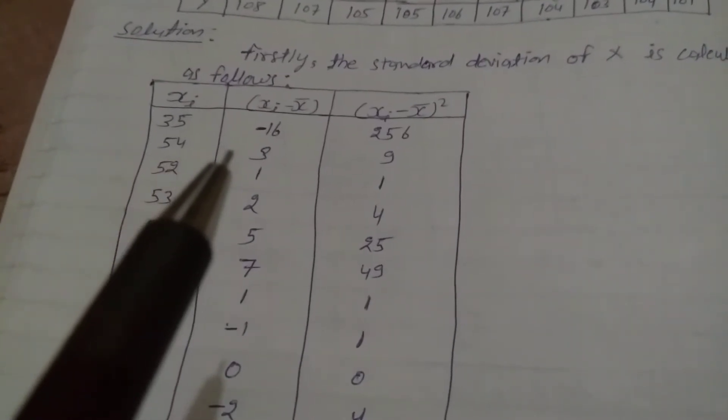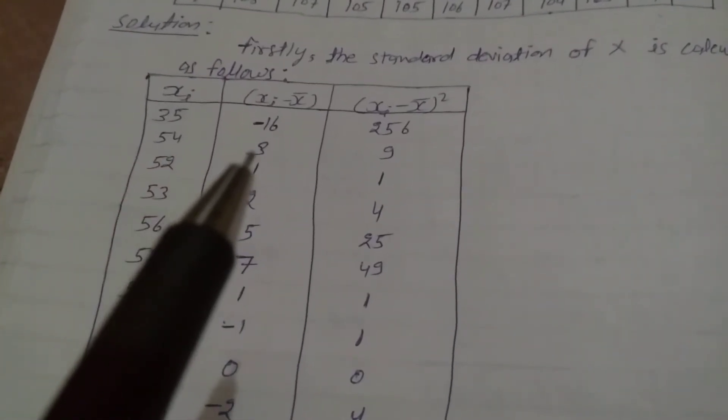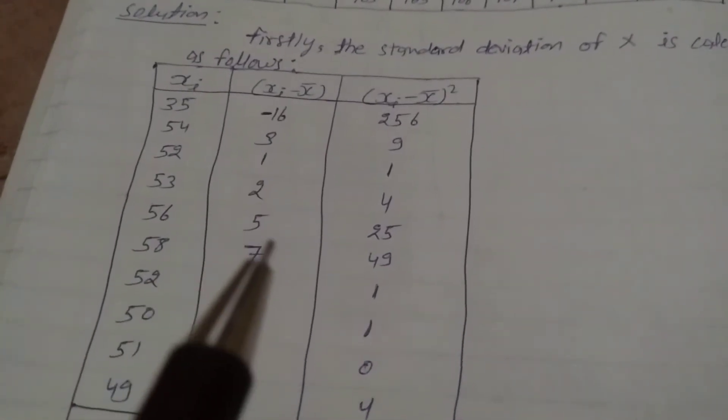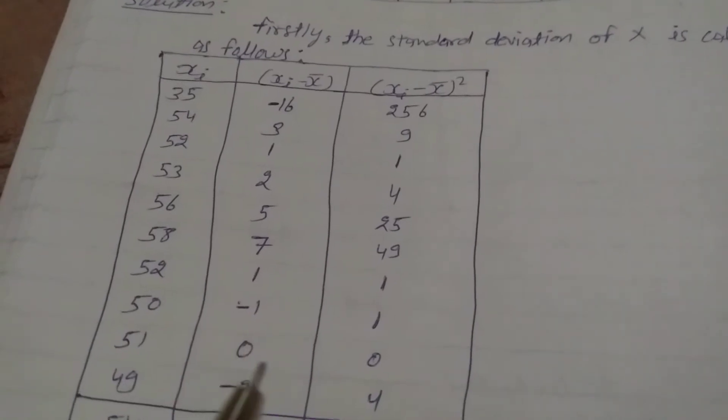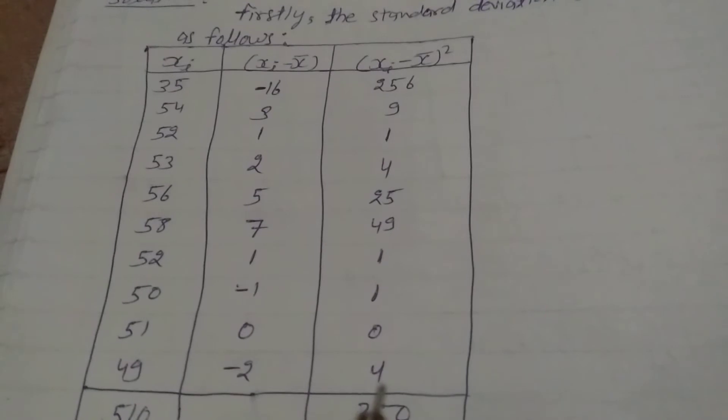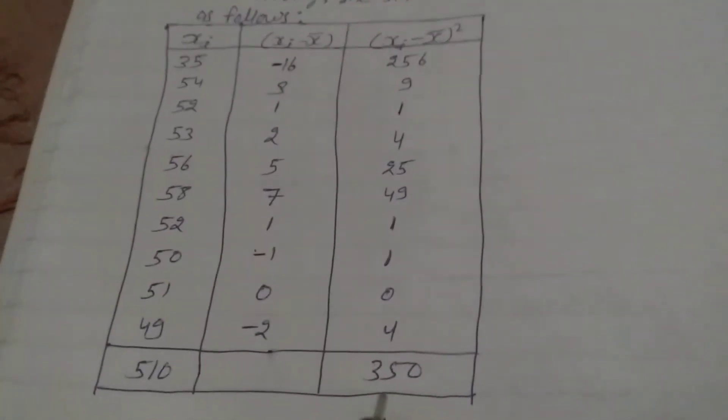54 minus 51 is 3. The other Xi minus X-bar values are: 1, 2, 5, 7, 1, minus 1, 0, minus 2. The squared terms (Xi minus X-bar) whole square are: 256, 9, 1, 4, 25, 49, 1, 0, 4. The summation of all squared terms is 350.